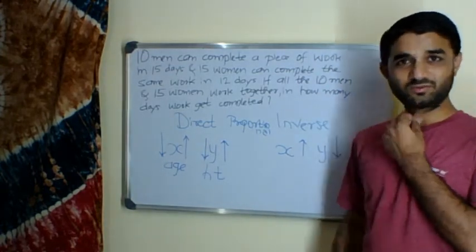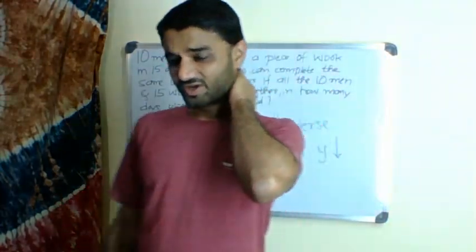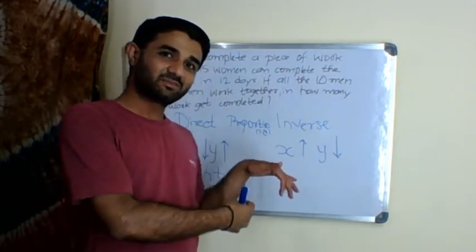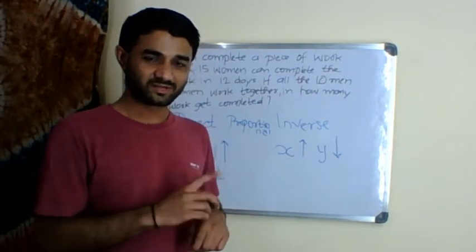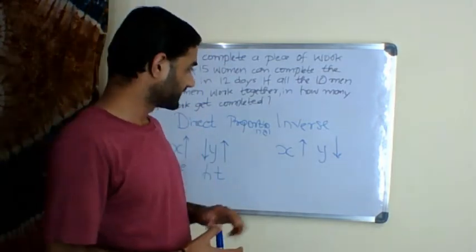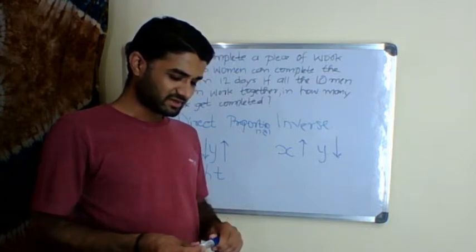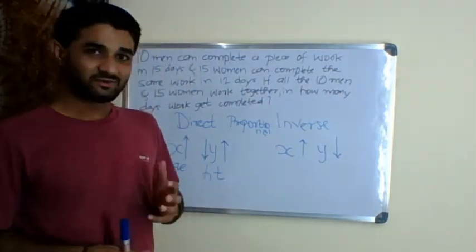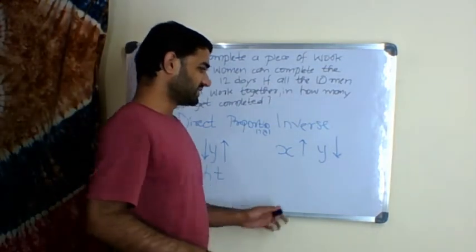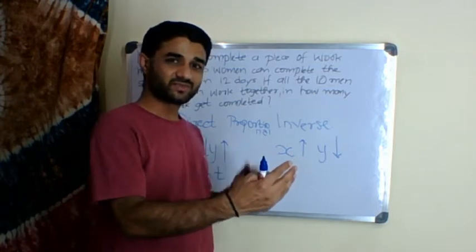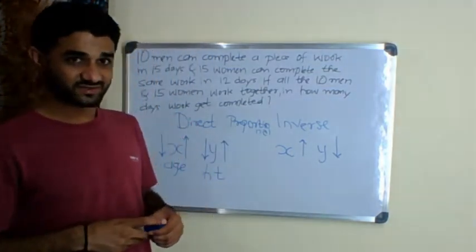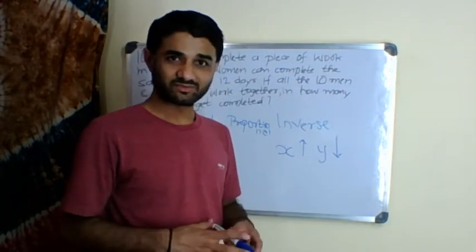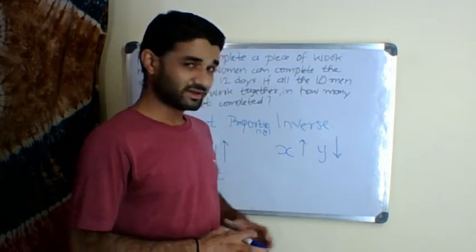For inverse relation, let me take a typical example that will help us in proper visualization. As you approach the city, your speed decreases. In highways we can ride fast, but as you approach the city, the speed decreases. Distance and speed are inversely proportional.